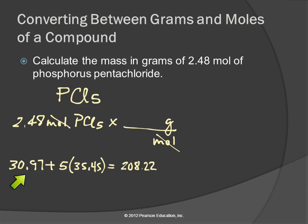I would encourage you though to write it down. Because then if you get your answer wrong, you can go back and double check, did I calculate the molar mass correctly? So this number here is telling us that 208.22 grams of PCl5 is equal to one mole of PCl5.